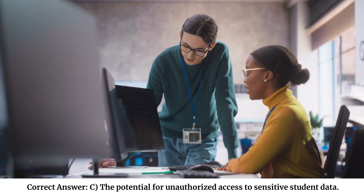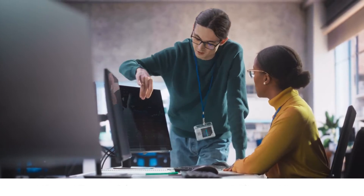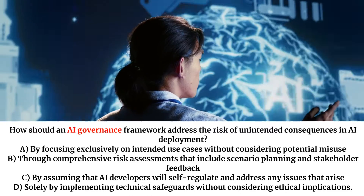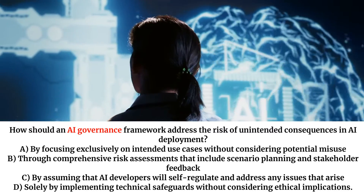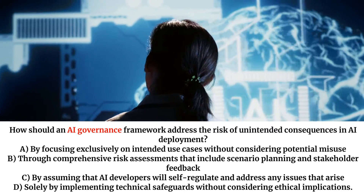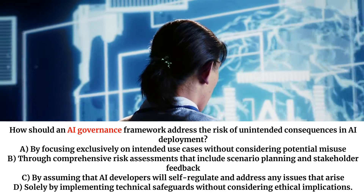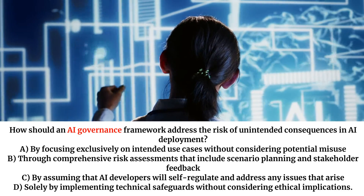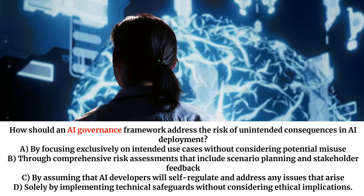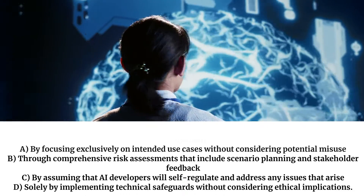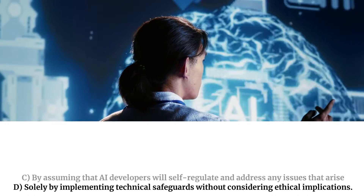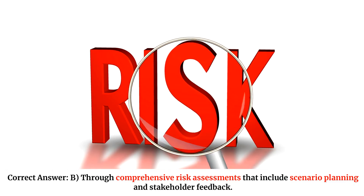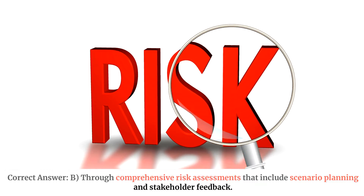How should an AI governance framework address the risk of unintended consequences in AI deployment? A. By focusing exclusively on intended use cases without considering potential misuse. B. Through comprehensive risk assessments that include scenario planning and stakeholder feedback. C. By assuming that AI developers will self-regulate and address any issues that arise. D. Solely by implementing technical safeguards without considering ethical implications. Correct answer: B. Through comprehensive risk assessments that include scenario planning and stakeholder feedback.